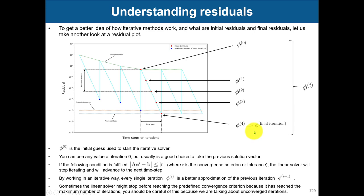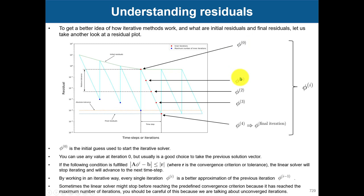When you reach the final tolerance and then move to the next time step, you can see this clearly in the residual plot. If the initial residuals reach the final tolerance, it means you have reached a steady solution — because your previous iteration is the same as the current one, so there is no need to iterate further. This is a steady solution, and you can stop. That doesn't happen very often.